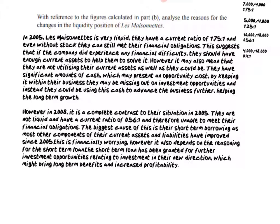In 2008 it's a complete contrast — they are not liquid and have a current ratio of 0.56 to 1, unable to meet their financial obligations. The biggest cause is their short-term borrowing, as most other components of current assets and liabilities have actually improved since 2005 — creditors, stock, and so on. So the only real issue on their balance sheet is that short-term borrowing, which could bring liquidity problems in the short term. However, maybe they borrowed for long-term gains — the short-term loan may have been granted to fund investment in a new direction that will bring long-term benefits and increased profitability.